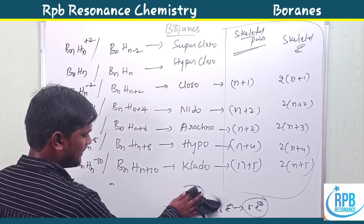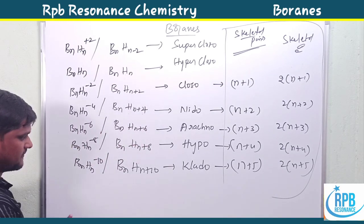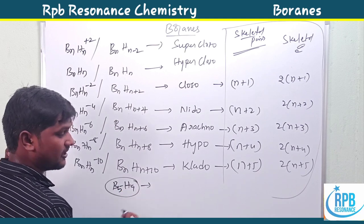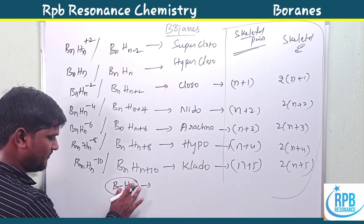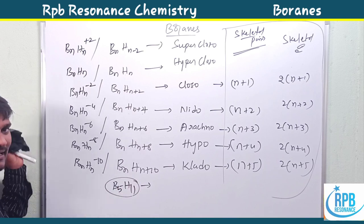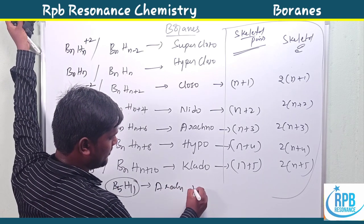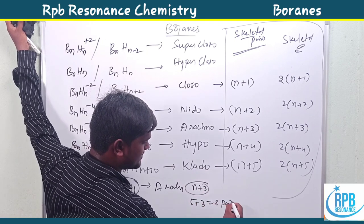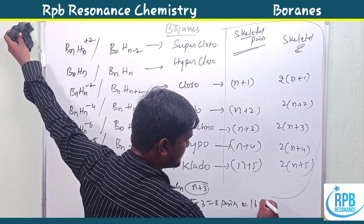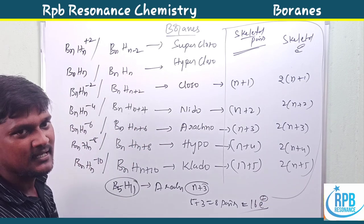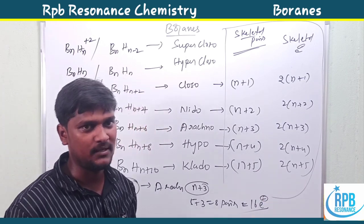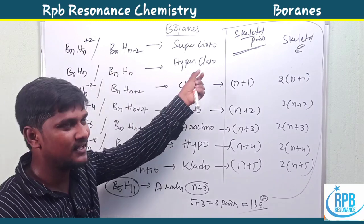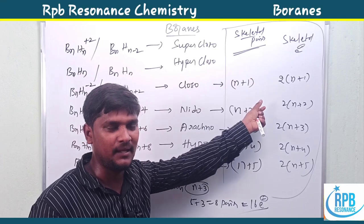For B5H11: this is arachno type, so the formula is n+3. Here n=5, so 5+3 = 8 pairs of electrons, which equals 16 skeletal electrons. This is the simplest classification of boranes including skeletal electron pairs and skeletal electrons.